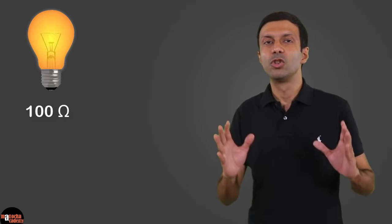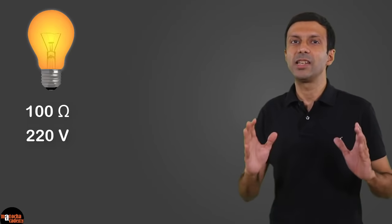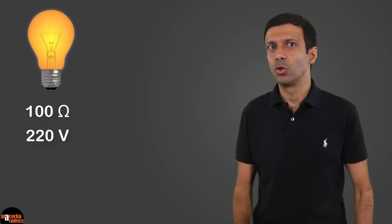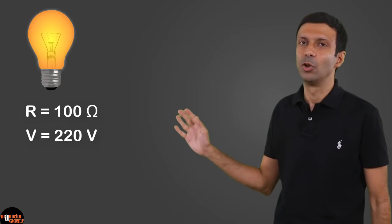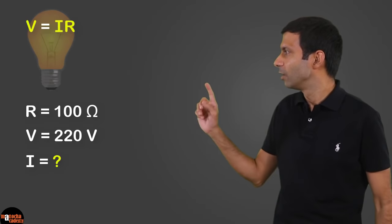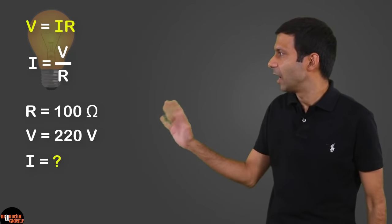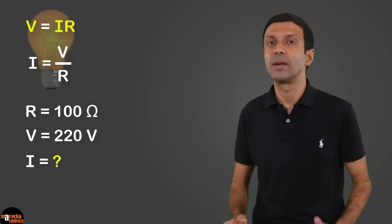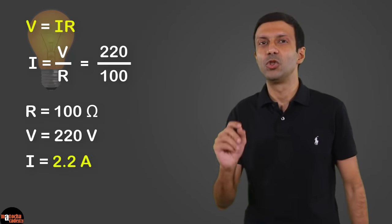Now let's look at an example of how to apply Ohm's law. A bulb has a resistance of 100 ohms and is connected to a 220-volt supply — how do we find the current drawn by the bulb? We have V equals 220 volts and R equals 100 ohms. Using V equals IR, rearranging gives I equals V divided by R. Substituting the values gives a current of 2.2 ampere.